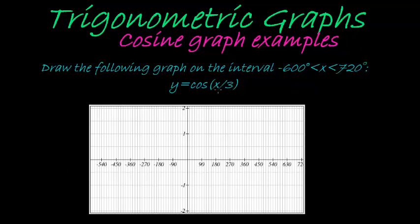Okay, once again another cosine example. In this case they ask us to draw the graph and here we see that's a massive interval from negative 600 degrees to 720 degrees. And they give us that y is equal to cos of x divided by 3.